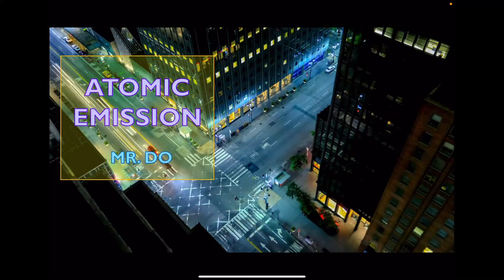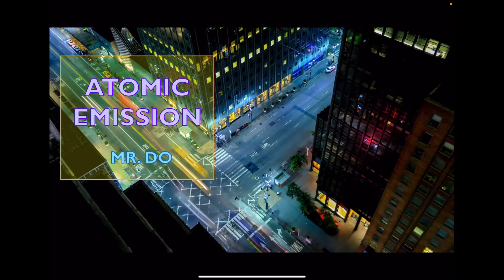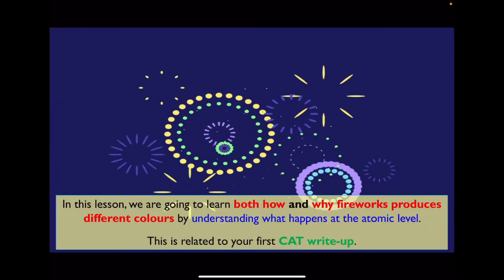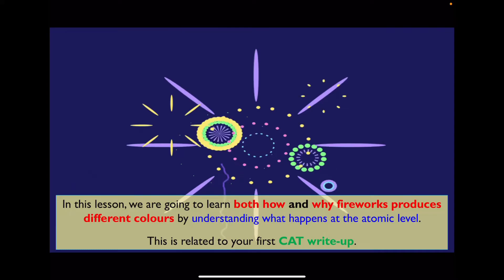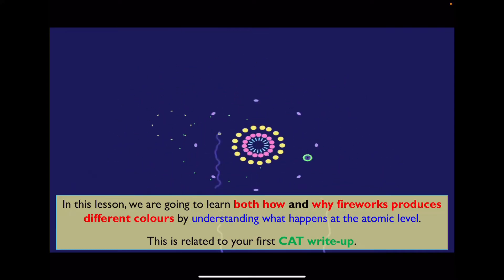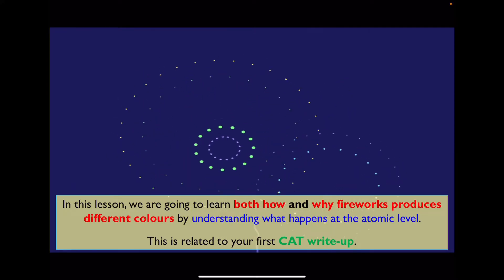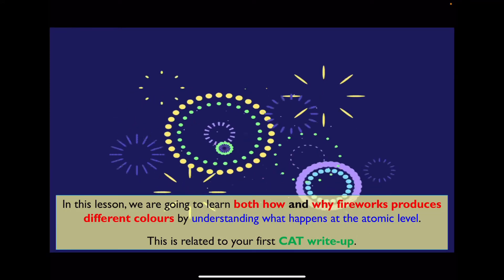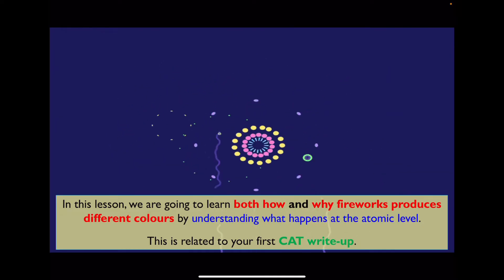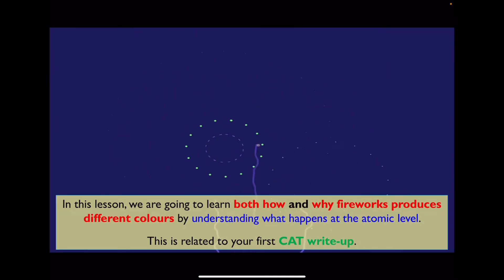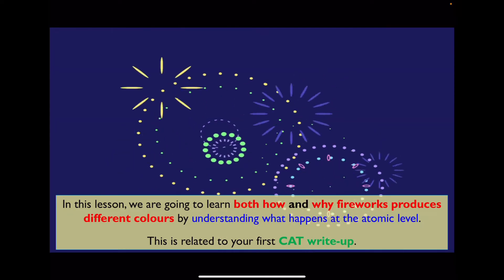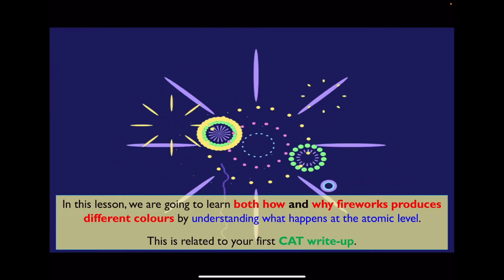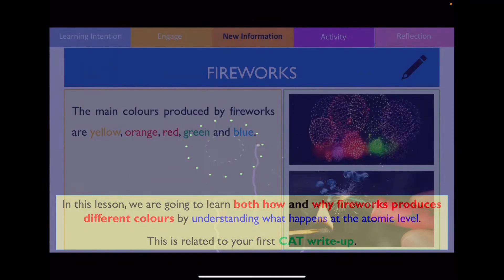Hello class. In this video we're going to be learning about atomic emission. I'm going to demonstrate and explain what happens at the atomic level when we burn fireworks to produce the beautiful colours that we see in the sky. I'd also like to point out that the content in this video is going to be extremely relevant to your first CAT.